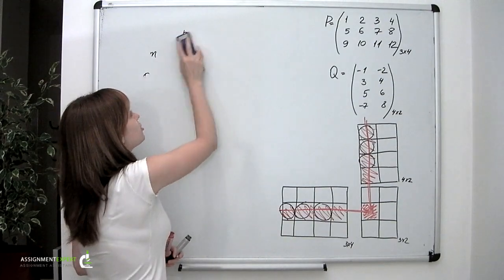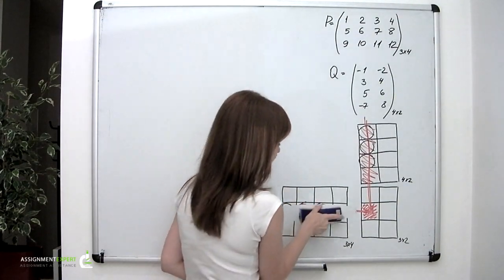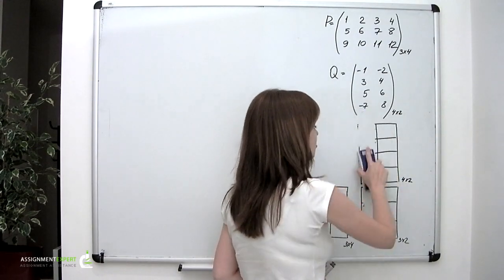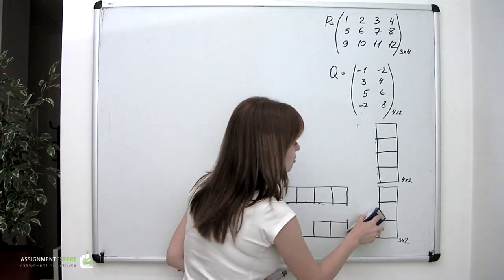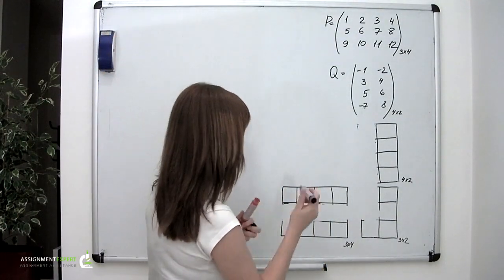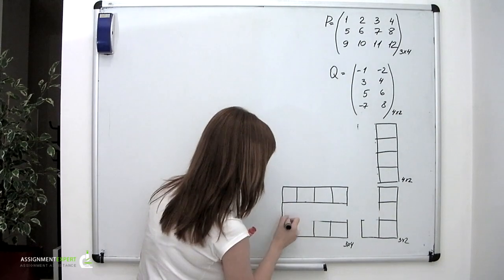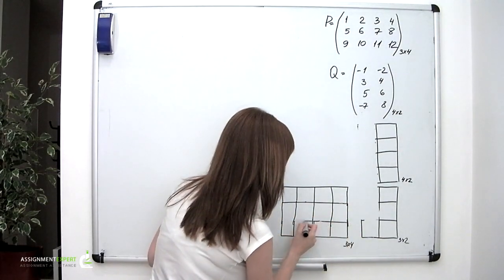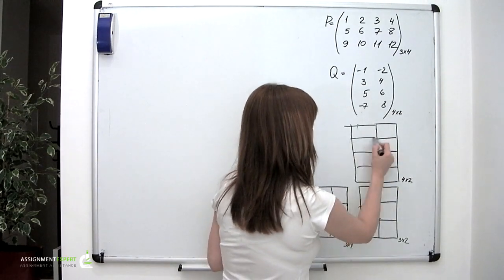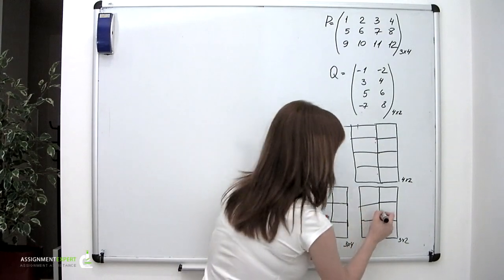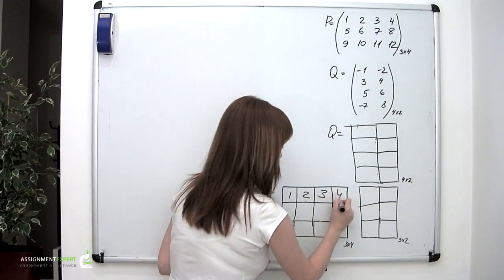Now let's try and multiply two real matrices. These matrices will be P and Q, written on our board. They are of sizes 3 by 4 and 4 by 2, which means that P has 3 rows and 4 columns and Q has 4 rows and 2 columns — a perfect match. Let's rearrange these matrices into tables so that the process of multiplication is convenient. This is P: 1, 2, 3, 4, 5, 6, 7, 8, 9, 10, 11, 12.